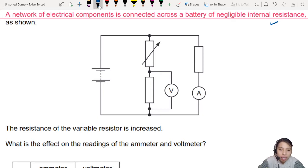The resistance of the variable resistor is increased. This is called a change in a circuit. What is the effect on the reading of the voltmeter V and the ammeter A?